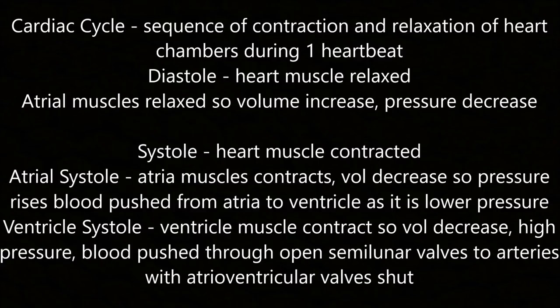The cardiac cycle is the sequence of contraction and relaxation of the heart chambers during one heartbeat. Diastole: heart muscle is relaxed; atrial muscles relax, volume increases and pressure decreases. Systole: heart muscle contracts. Atrial systole: atrial muscle contracts, volume decreases and pressure rises; blood is pushed from atria to ventricles as they are at lower pressure. Ventricular systole: ventricle muscles contract, volume decreases and pressure is high; blood is pushed through the open semilunar valves to the arteries with the atrioventricular valves shut.